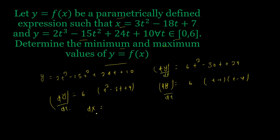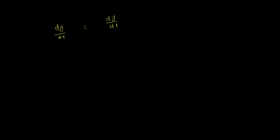I will take dx/dt because all the terms are in t. So dx/dt = 6t - 18, which factors as 6(t - 3). Now, dy/dx equals dy/dt divided by dx/dt.